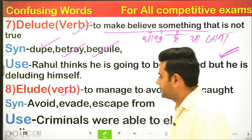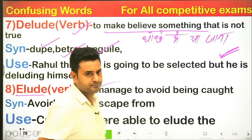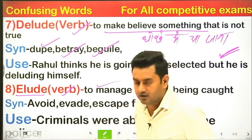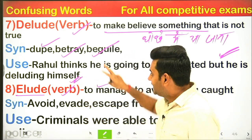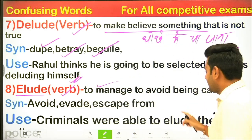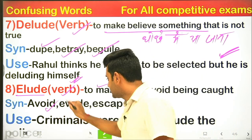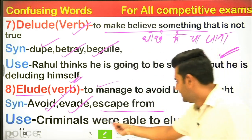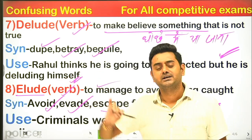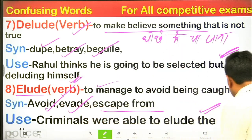Elude means to manage to avoid being caught — to escape, to get away. Synonyms: avoid, evade, escape. Example: 'Criminals who are able to elude the police.' Meaning: Criminals who manage to escape and get away from the police. That is elude — to escape, to avoid being caught.